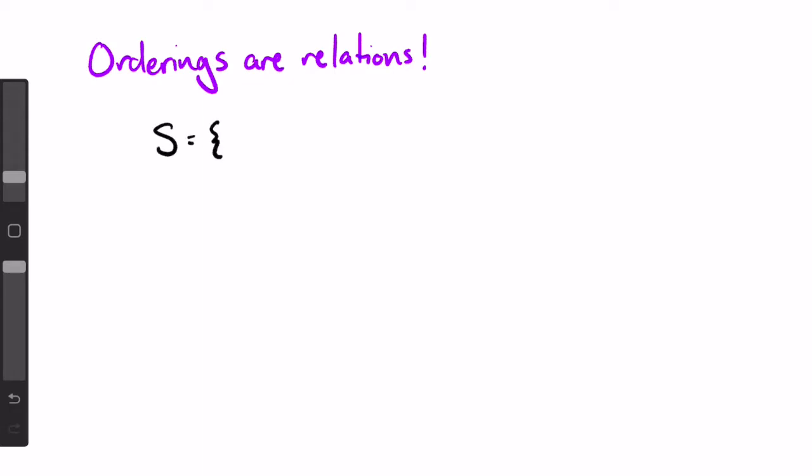For example, take the set S equals the set {1, 2, 3}. The ordering less than on S would be the set of ordered pairs {(1,2), (1,3), (2,3)}. It organizes the elements in S so that you can pick any two elements and know which one is less than the other.